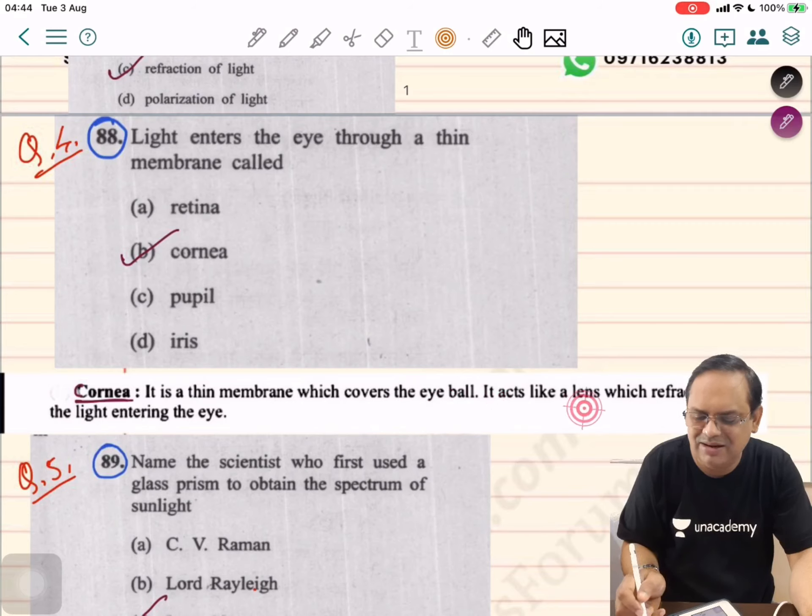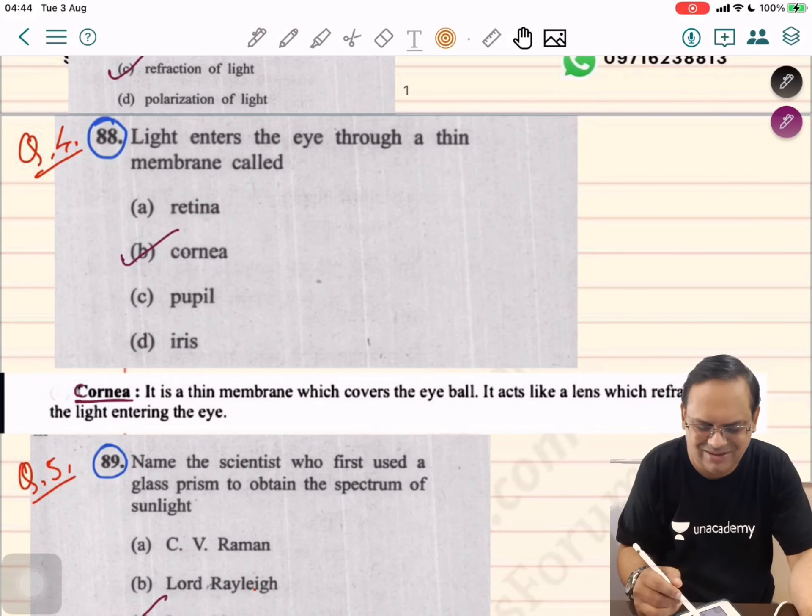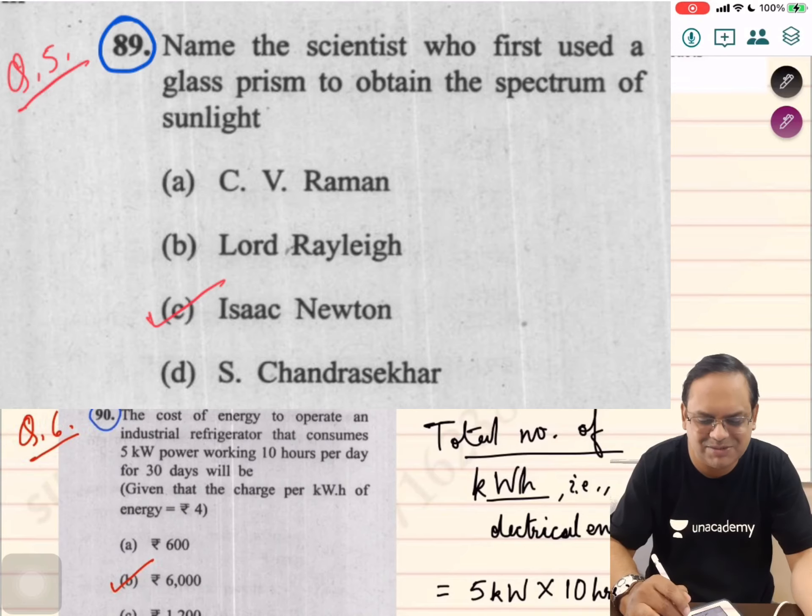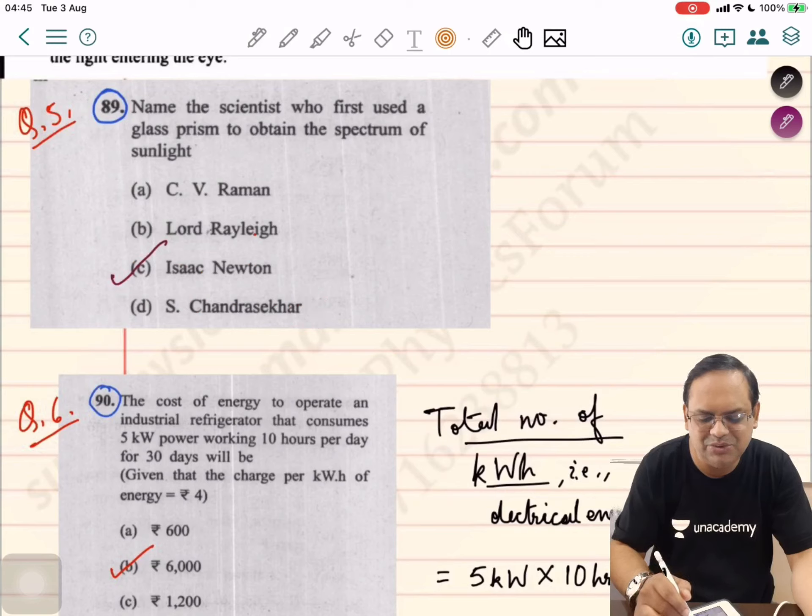Name the scientist who first used a glass prism to obtain the spectrum of sunlight. I may say two scientists are Indians, but the answer will be Isaac Newton's.